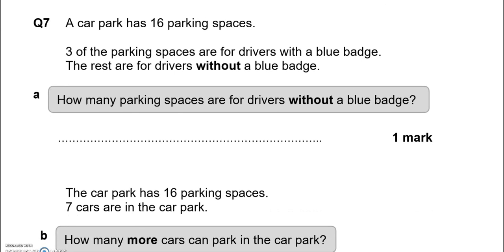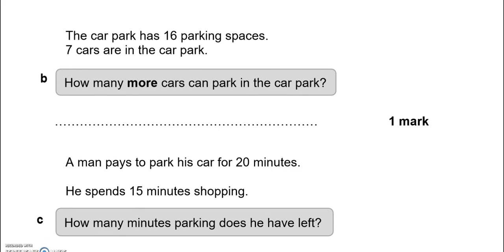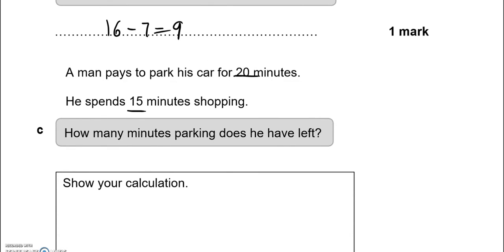A car park has 16 parking spaces. 3 of the parking spaces are for drivers with a blue badge. The rest are for drivers without a blue badge. So 16 take away 3 leaves us with 13. The car park has 16 parking spaces. 7 cars are in the car park. How many more cars can park in the car park? So 16 take away 7 gives us 9. A man pays to park his car for 20 minutes. He spends 15 minutes shopping. How many minutes parking does he have left? So 20 take away 15, that is 5 minutes left.